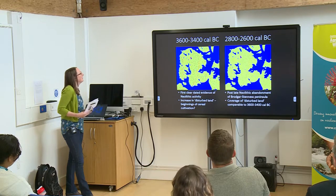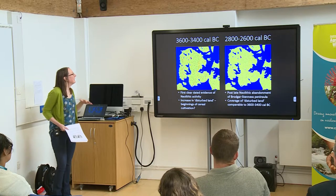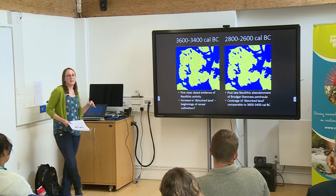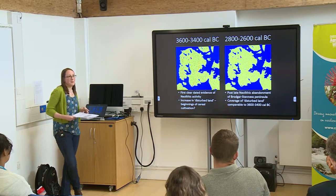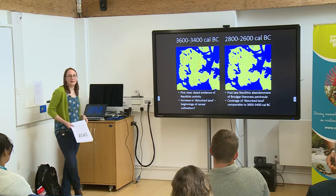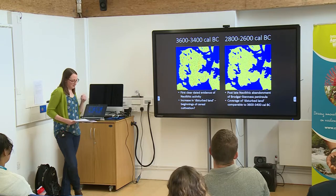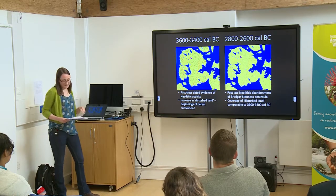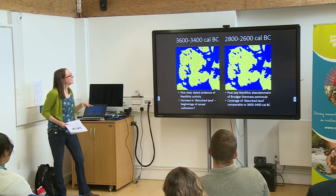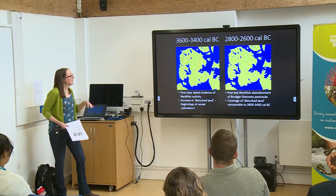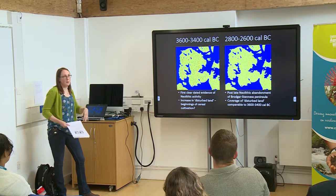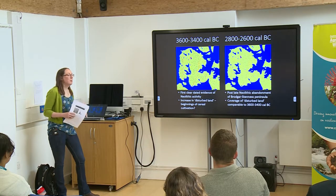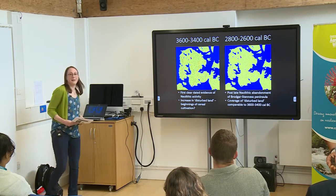Moving on to 3,600 to 3,400 BC — when we have the first clear dated evidence of Neolithic activity on mainland — there is an increase in our disturbed land community of about 800 hectares. We interpret this increase above the natural baseline as perhaps reflecting the beginnings of cereal cultivation by the first settlers in Orkney. Going a bit later, to 2,800–2,600 BC — just after the late Neolithic abandonment of settlements in the core ceremonial area — woodland cover has declined, but the coverage of disturbed land is comparable to the earlier time slice. So although settlements in the core area seem to have been abandoned, people were clearly still there doing stuff in the landscape.